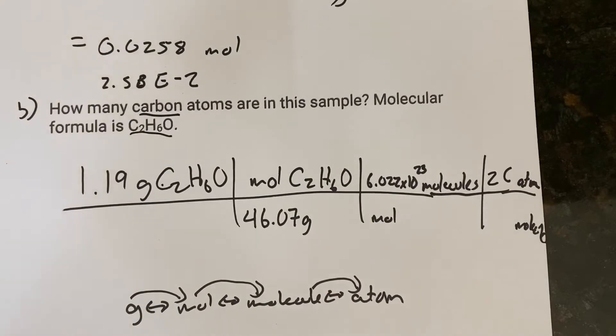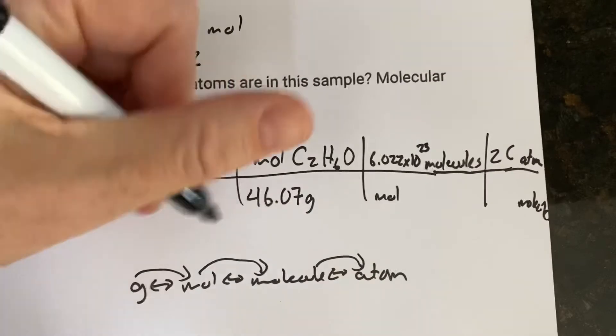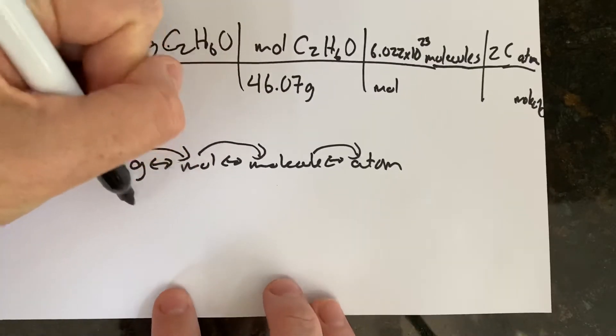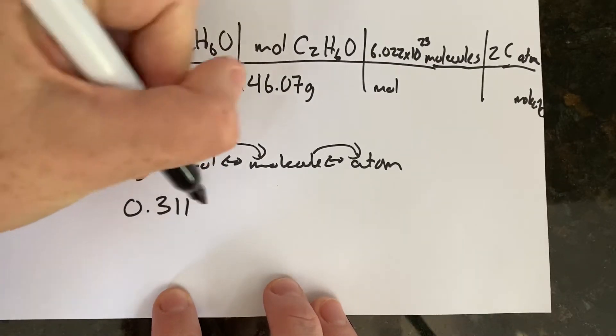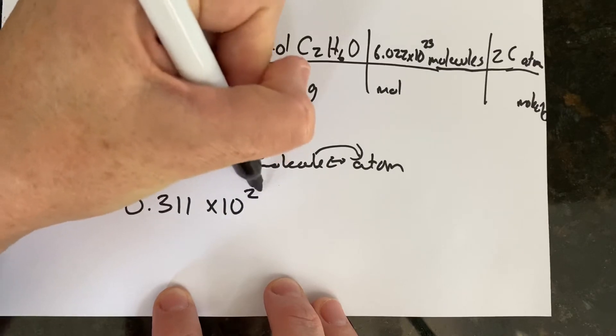So we're going to multiply it by two. So I'm going to do the whole thing, 1.19 times 6.022 times 10 to the 23rd times 2 divided by 46.07. And I get an answer of 0.311 times 10 to the 23rd.